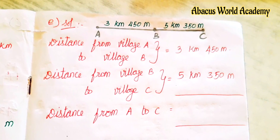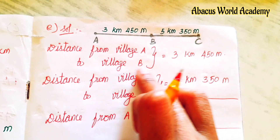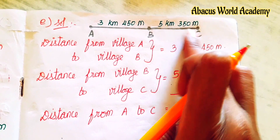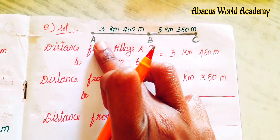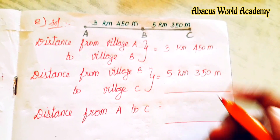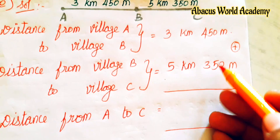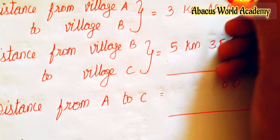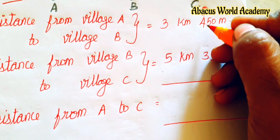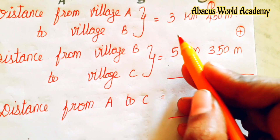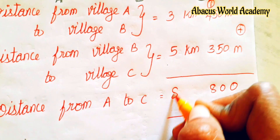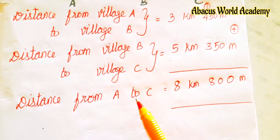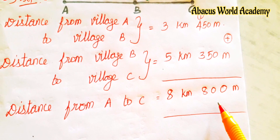So A to B plus B to C is equal to A to C. A to B is 3 km 450 m, and B to C is 5 km 350 m. Adding: 0 plus 0 is 0, 5 plus 5 is 10, write 0 carry 1. 1 plus 4 is 5, 5 plus 3 is 8, so 800 m. Next, 3 plus 5 is 8, so 8 km. Distance from A to C is equal to 8 km 800 m.